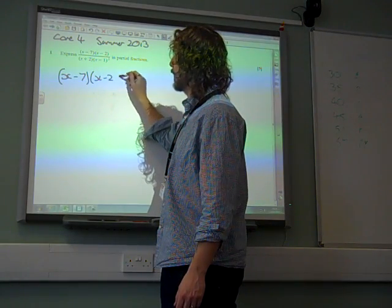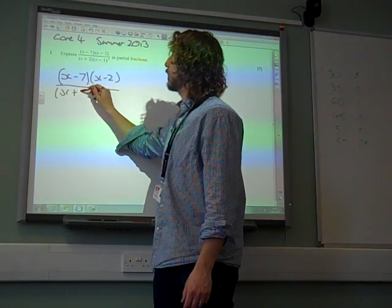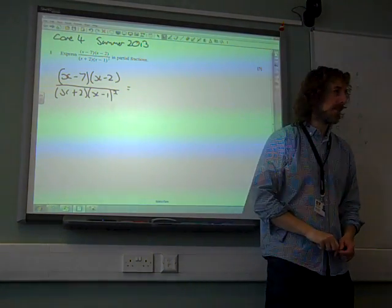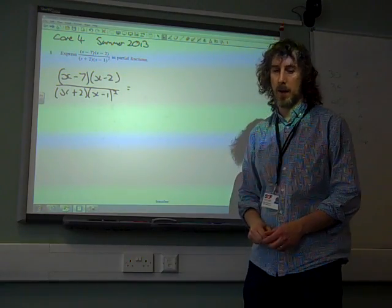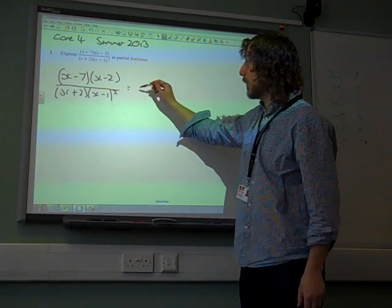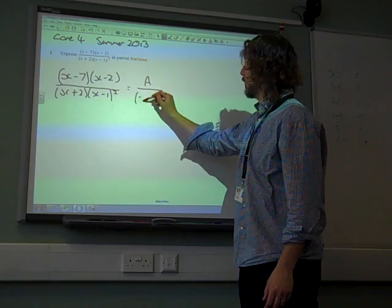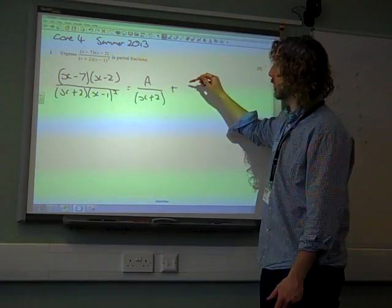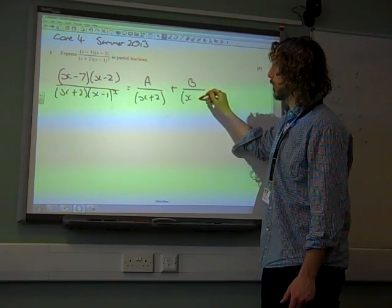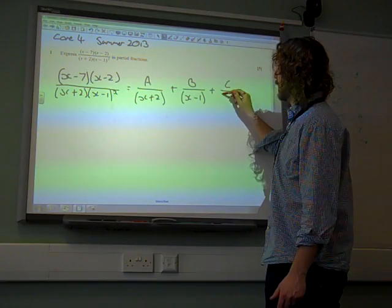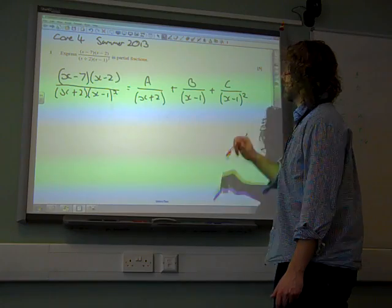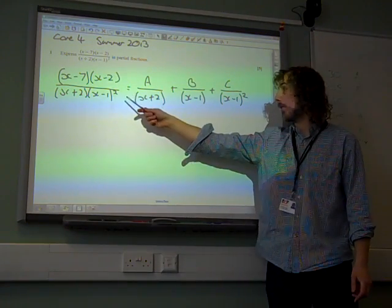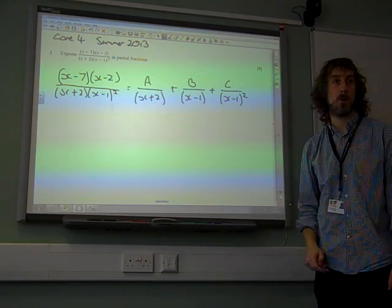I really need to write out the whole thing. Anyway, so we've got x plus 2 and x minus 1 squared as the factors of the bottom line. So we would have something over x plus 2 plus something over x minus 1 and also something over x minus 1 squared. So we'd have a look at that because, remember, if you've got this repeated root, you'd have it squared and on its own.